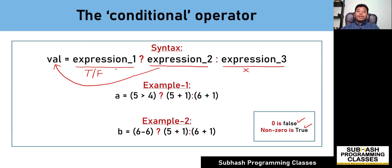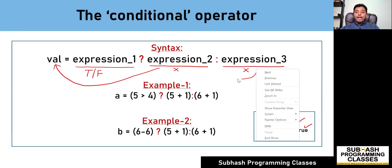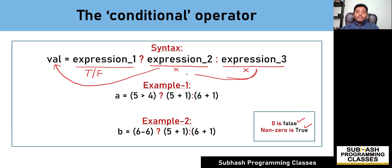If expression one results in a zero value — that is, if expression one results in a false condition — then expression two will be ignored and expression three will get evaluated, and the result of expression three will get stored into the variable val.